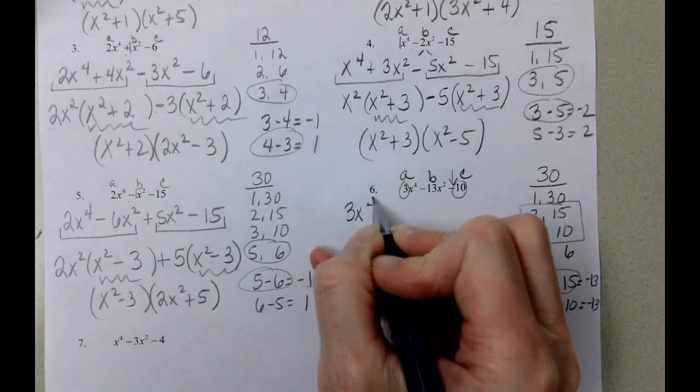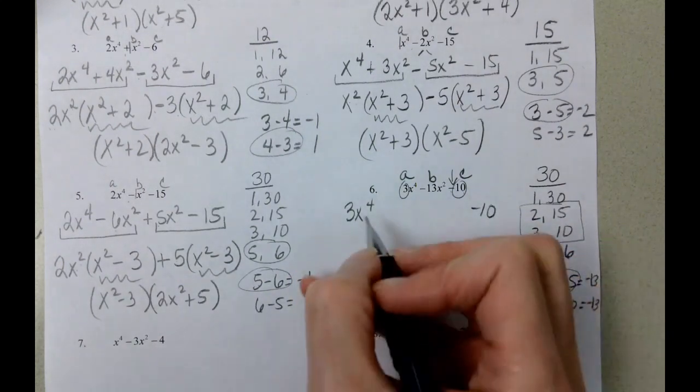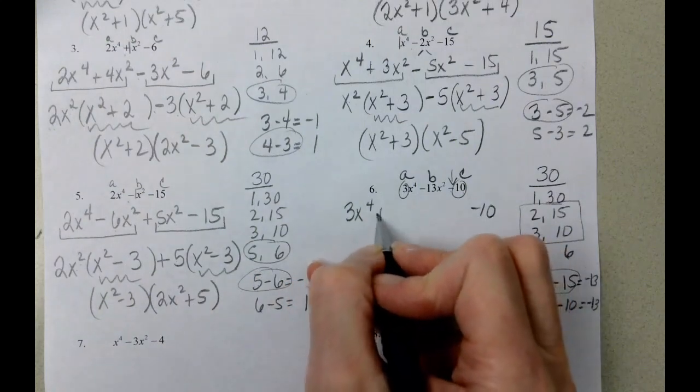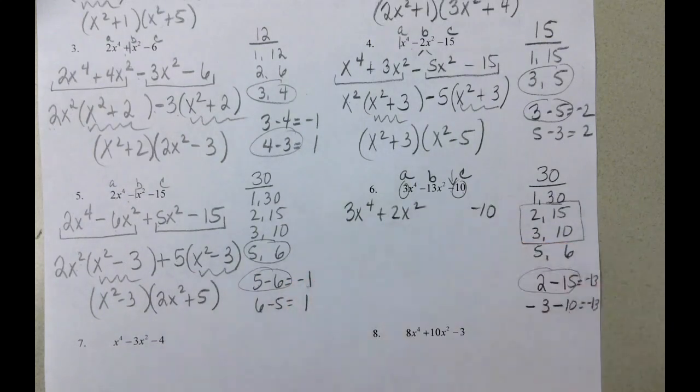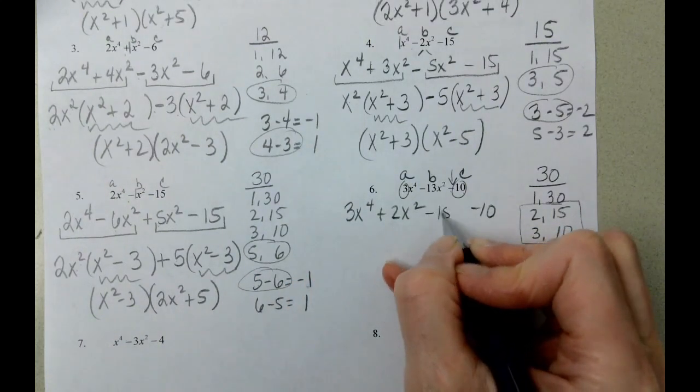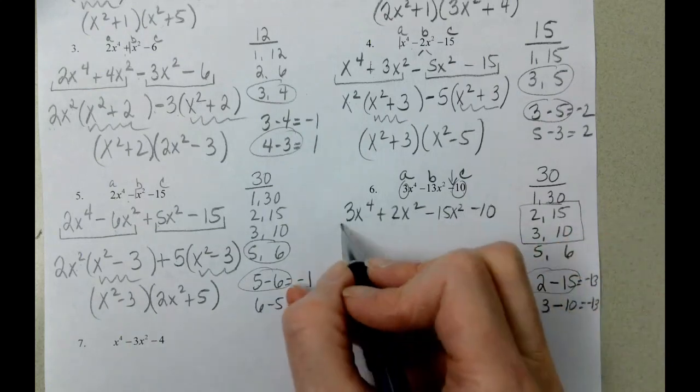3x to the fourth minus 10, and then it's going to be plus 2x squared minus 15x squared. We group.